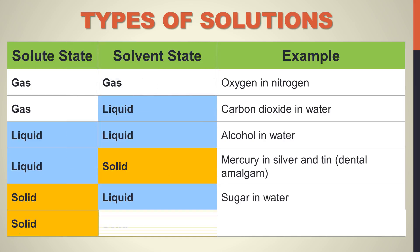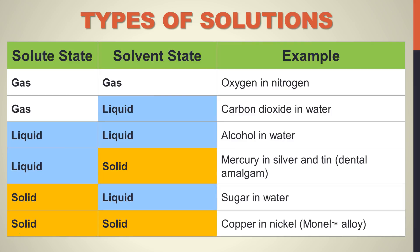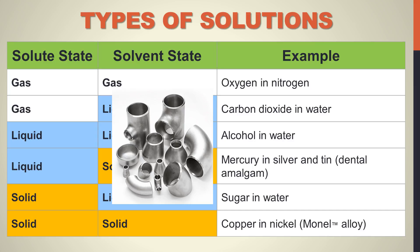You can also have a solid dissolved in another solid. When you have an alloy — which is the combination of multiple metals — that is one metal dissolved in another. When you have copper dissolved inside nickel, that's where you get monel and some other very strong nickel alloys. It's not just one element; it's a combination.